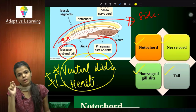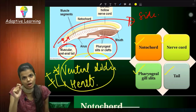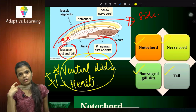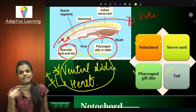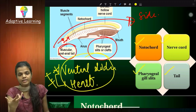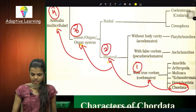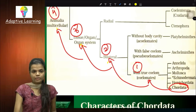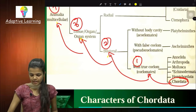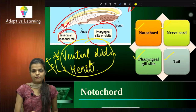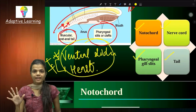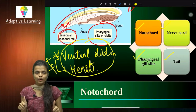In an exam, if a question comes — define chordates or describe chordates — you can write these four characters, plus the additional one about the heart on the ventral side. So total nine characters are there in your mind. This is ready and you need to memorize it.